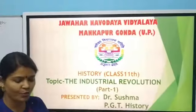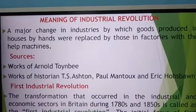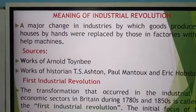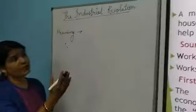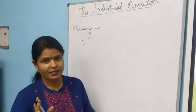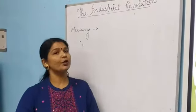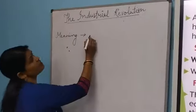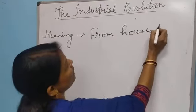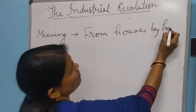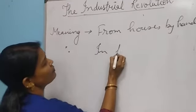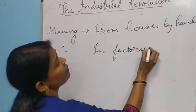First of all, we are going to deal with the meaning of Industrial Revolution. Previously, goods were produced in houses by hands. Now, the change occurred — goods were produced in factories. That was the major change: from houses and by hands to factories.